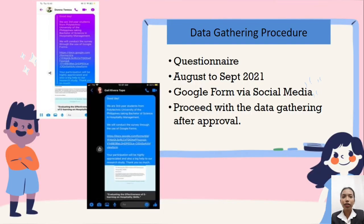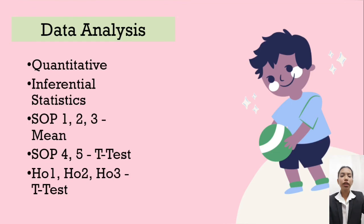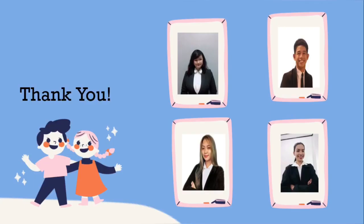Data gathering: A quantitative technique was chosen as the research strategy. The researchers conducted a survey using a questionnaire through Google Forms. Researchers preferred multiple sources to gather data, conducted using email and social media. Data analysis: Researchers used inferential statistics that use a random sample of data taken from a population to describe and make inferences about the population. According to Manitab 2018, inferential statistics are valuable when examination of each member of an entire population is not convenient or possible. Thank you for your kind attention to our presentation. We are now ready for your inquiries and suggestions.